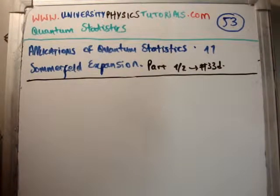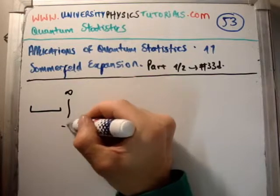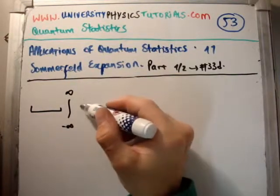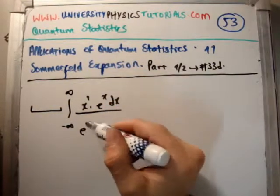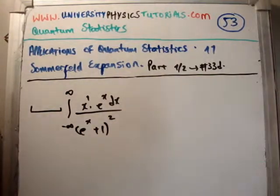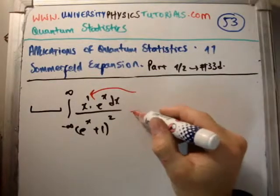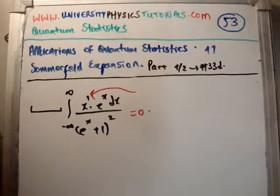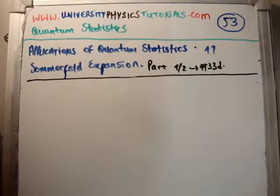For the second term, the integral has x to the power of 1 times e to the x·dx over (e to the x plus 1) squared. This is an odd function of x, and integrating odd functions over a symmetric interval always gives 0. So there is no contribution from the middle term.